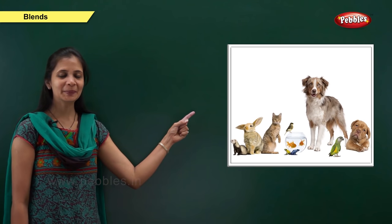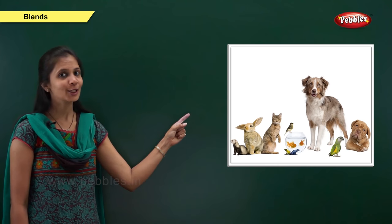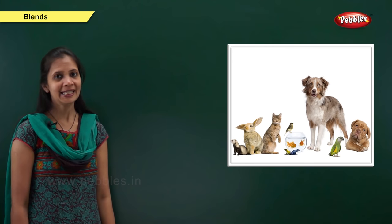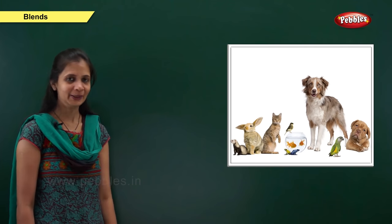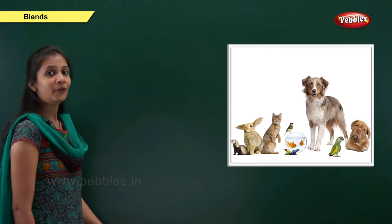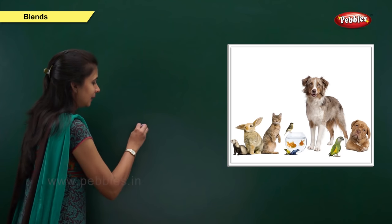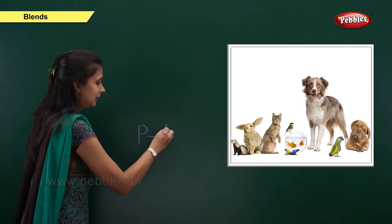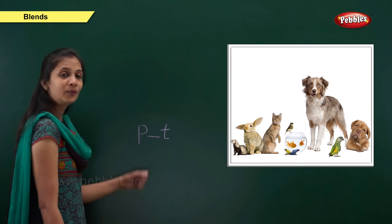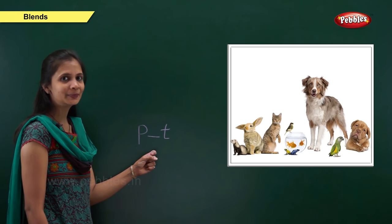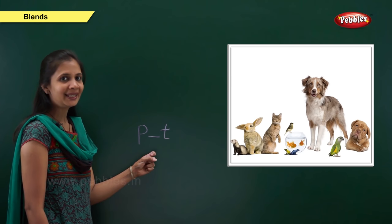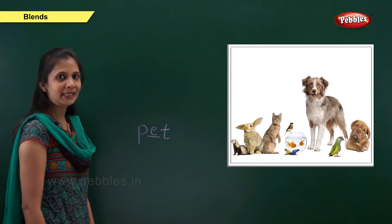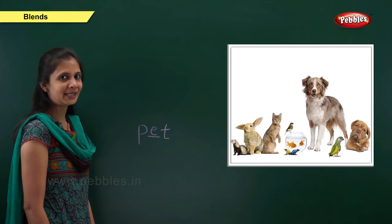Next one. Which picture is this? Yes, it is pet. What is the sound of it? It is pa, a, ta — pet. When the beginning sound is 'pa', the letter is p. When the ending sound is 't', the letter is t. When the middle sound is 'a', the letter is vowel e. So: p, e, t — pet.